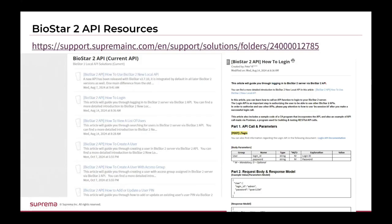The next resource is our BioStar 2 API articles page. If you go to this link, you'll find a list of articles that include information on how to use the APIs and any important news or changes. These articles include more detail compared to the Postman documentation and will answer a lot of questions that might come up while using the APIs. I highly recommend checking out these resources if you run into any inquiries.